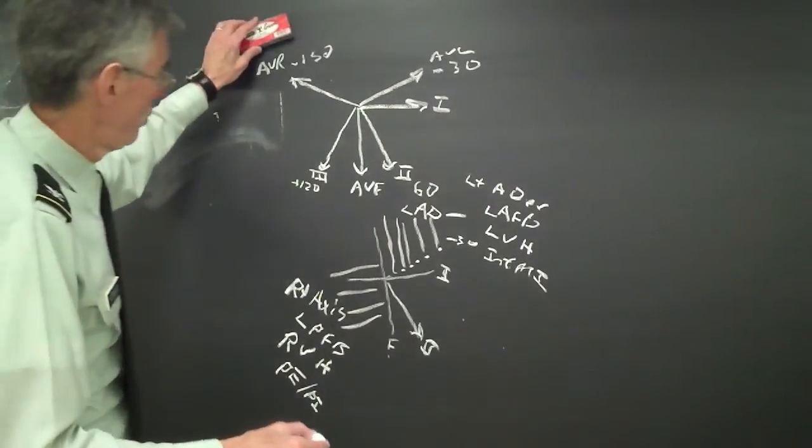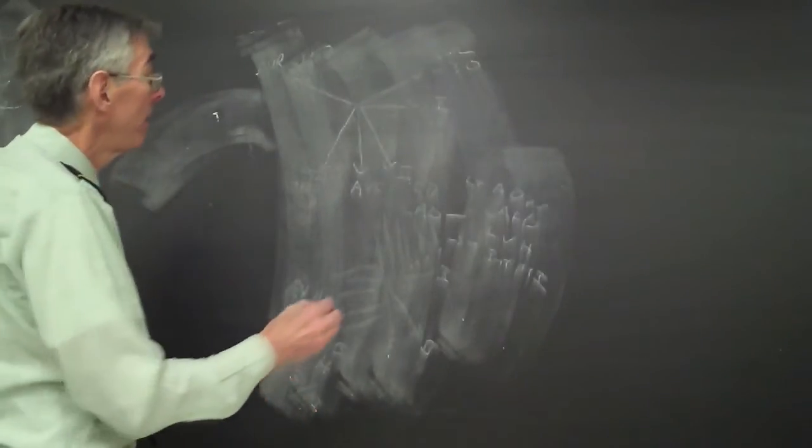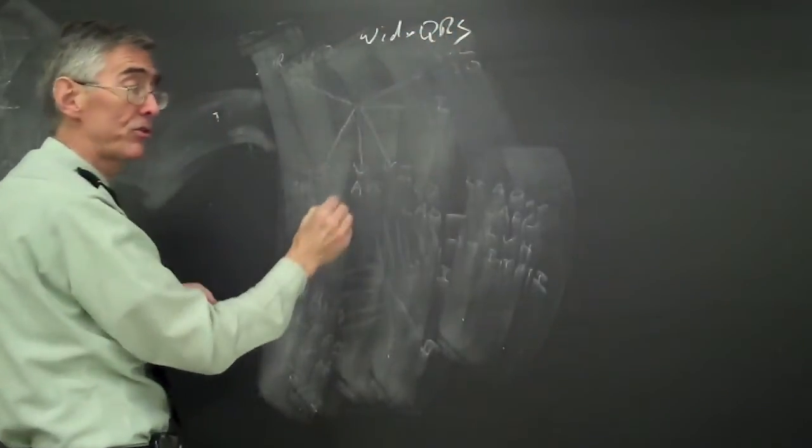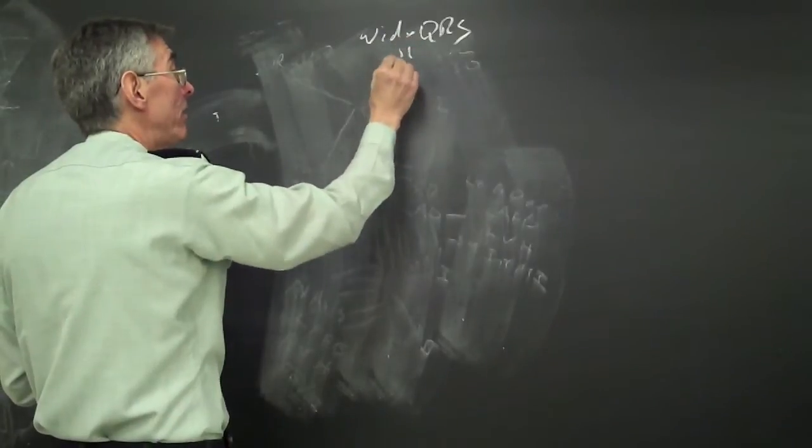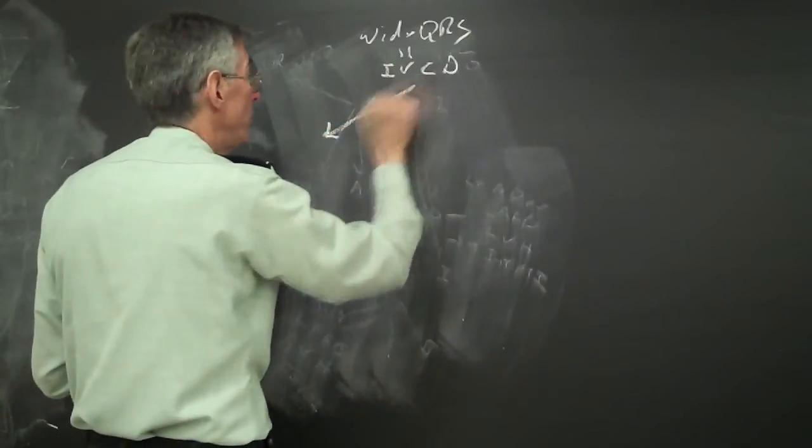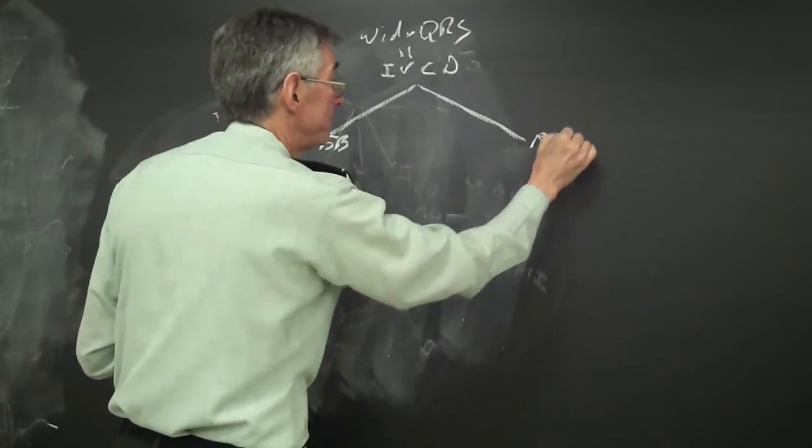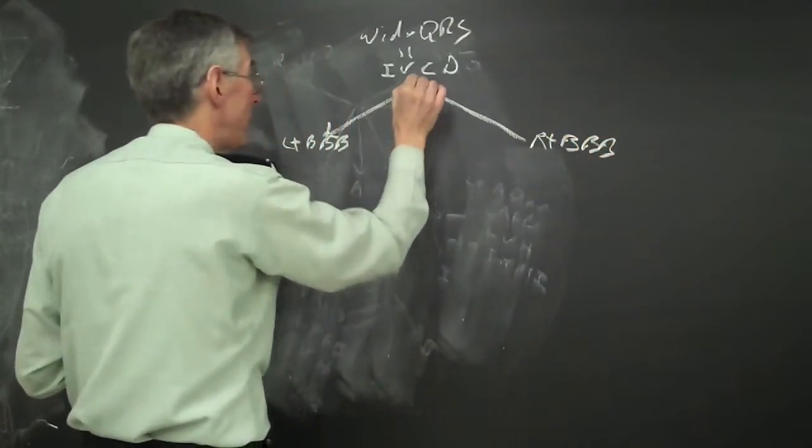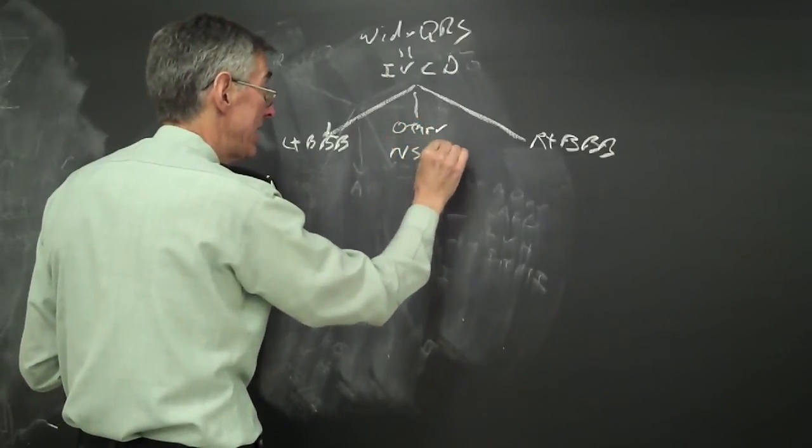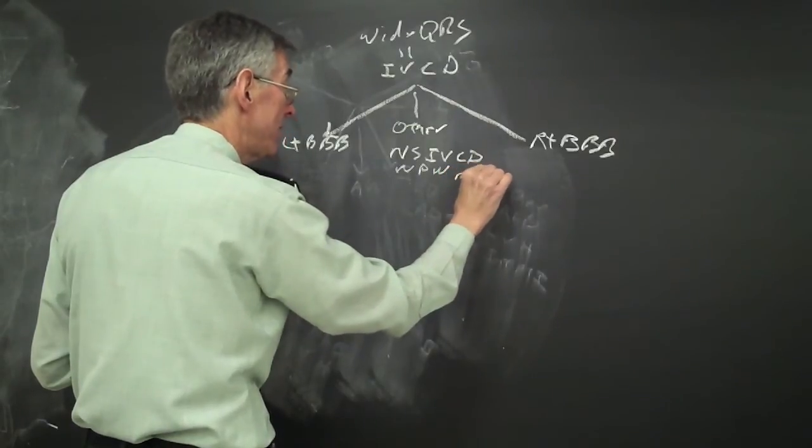With wide QRS rhythms, you want to be careful. Wide QRS means interventricular conduction delay. Usually we divide these into left bundle branch block, right bundle branch block, or other. And other can be like nonspecific IVCD, or sometimes Wolf-Parkinson-White pattern, pre-excitation pattern, can be in here.